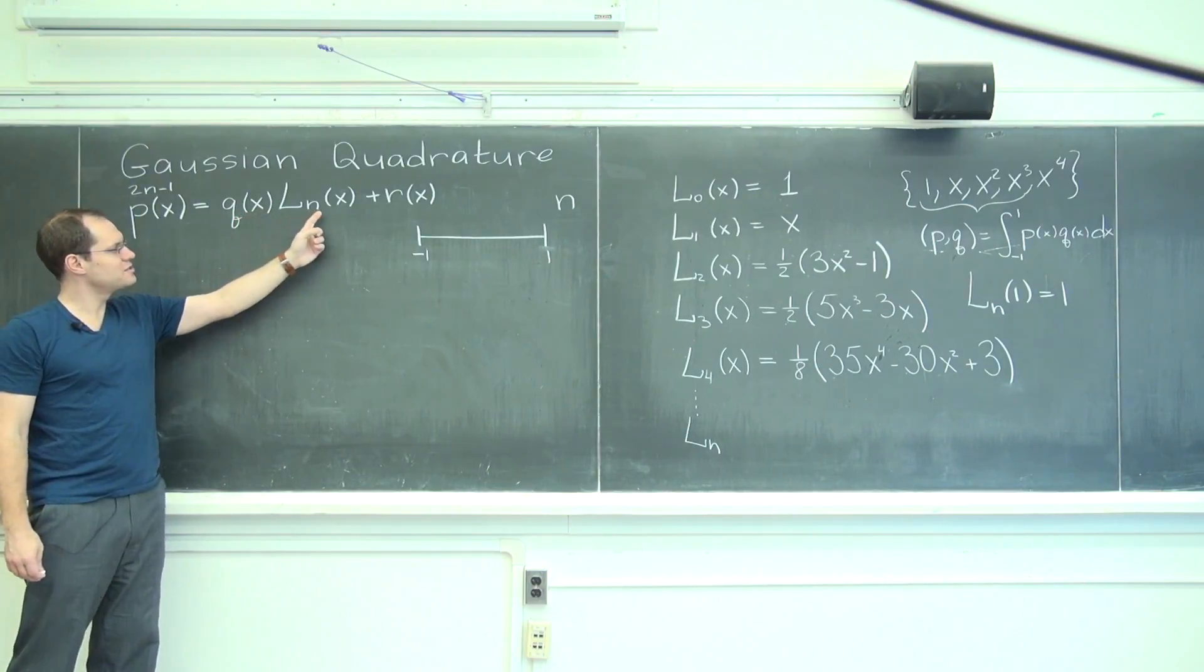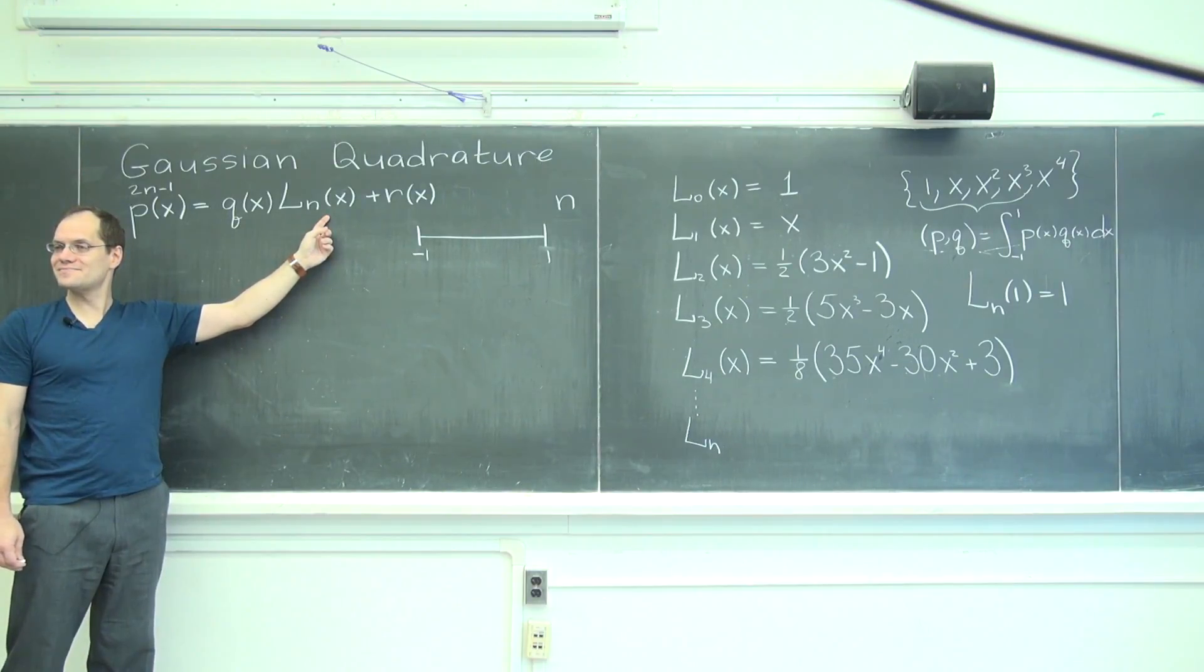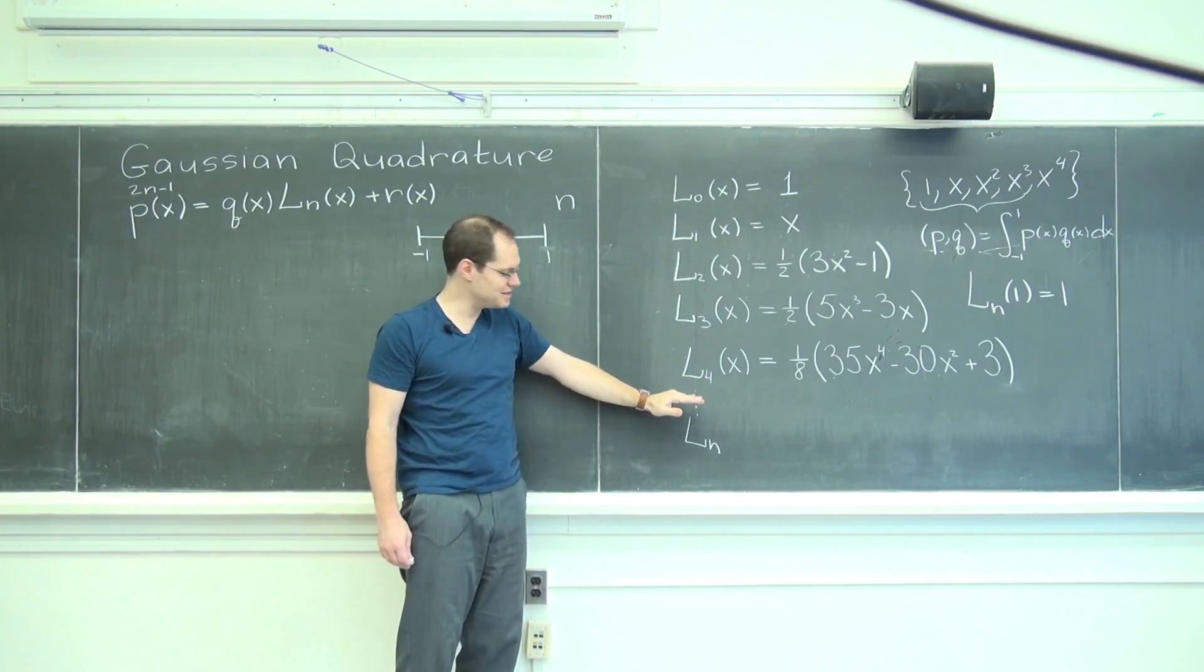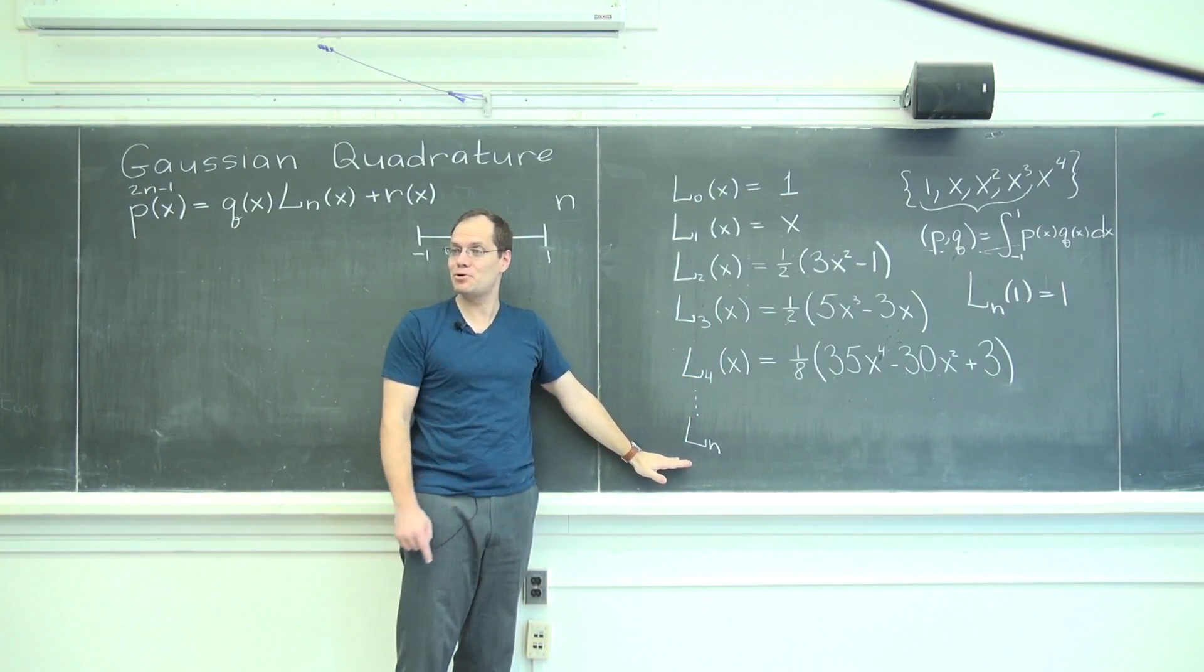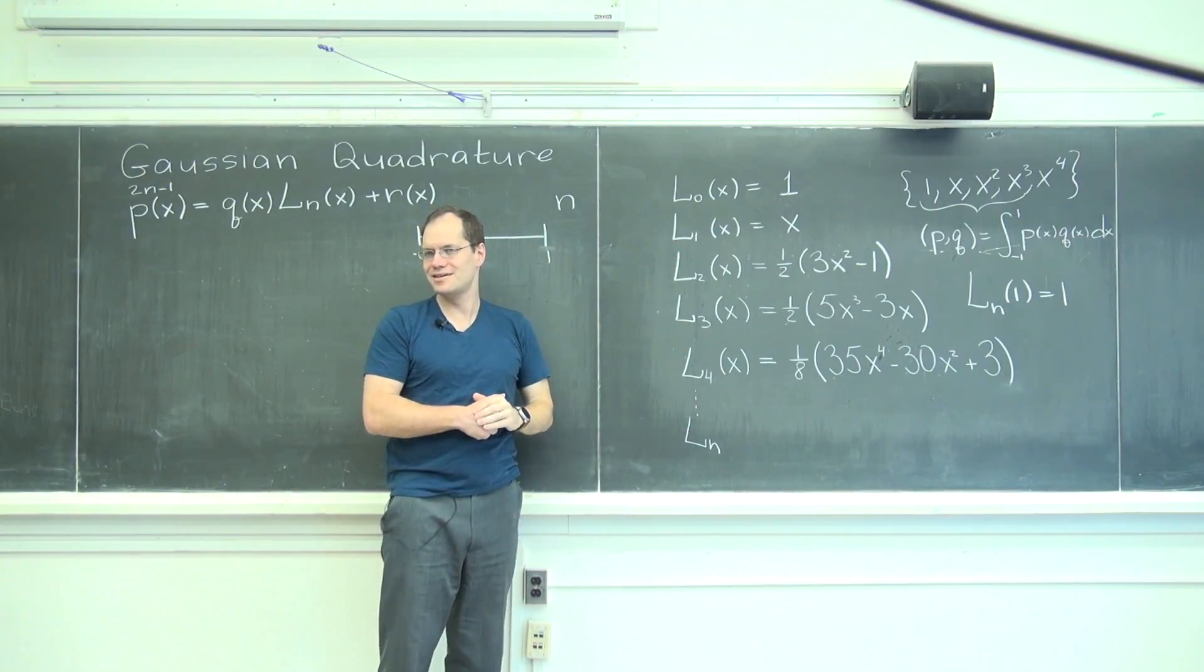Do you agree that this one is orthogonal to this one? Yes, because it's degree less than n. It's up to n minus 1. And as I mentioned, and it was very important, this one is orthogonal to any polynomial of degree n minus 1.